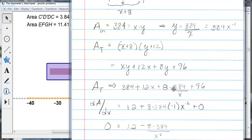Now that I have my total area defined with respect to just one independent variable, I can take dA dx. So this is a constant. Derivative of 12x is 12 plus, notice I try not to multiply this out.